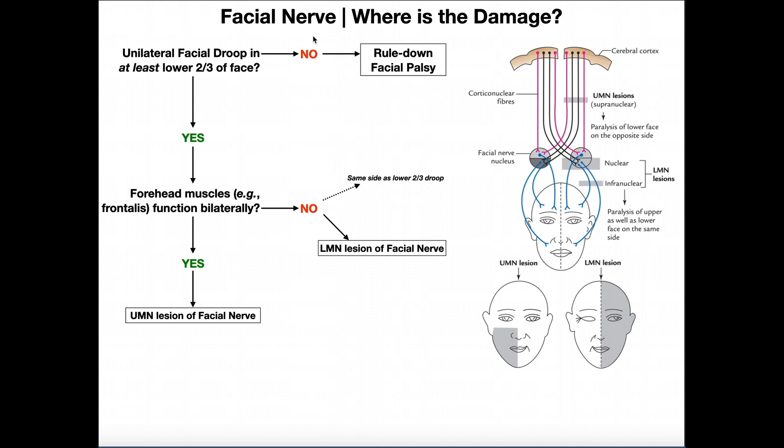In this video, we're going to talk about facial palsy, which is damage to the facial nerve, and we're going to determine where that damage is actually occurring — whether an upper motor neuron is lesioned or a lower motor neuron. We're going to use a simple flowchart to figure that out, but to really understand it, we need to look at a picture on the next slide.